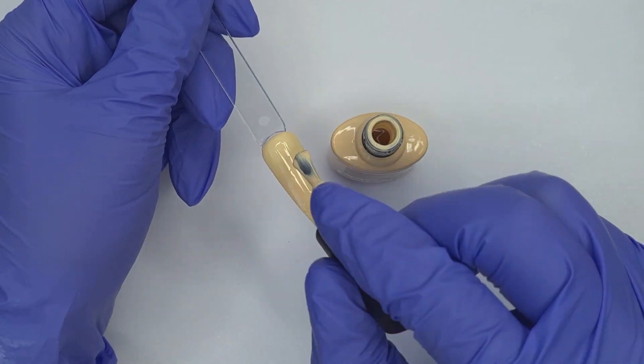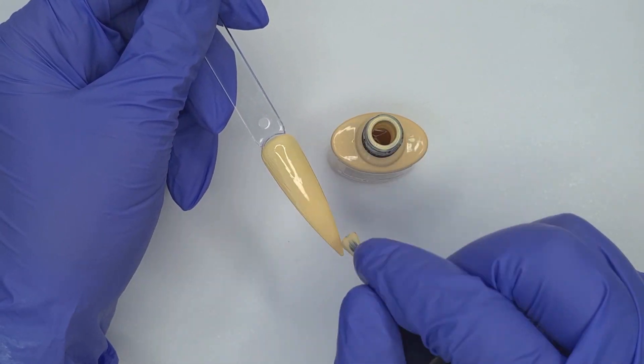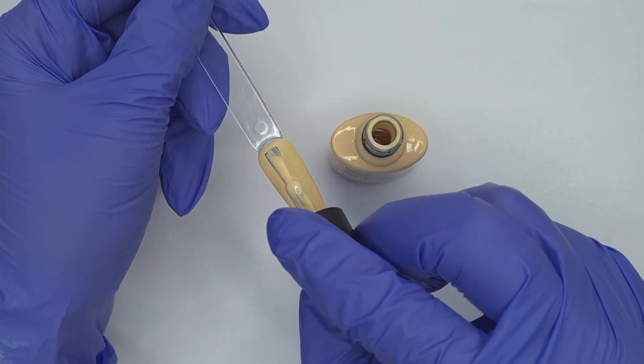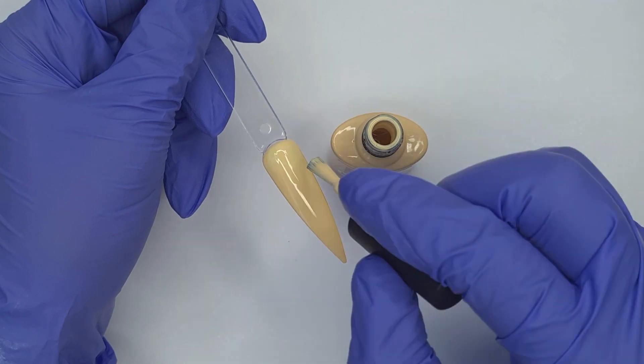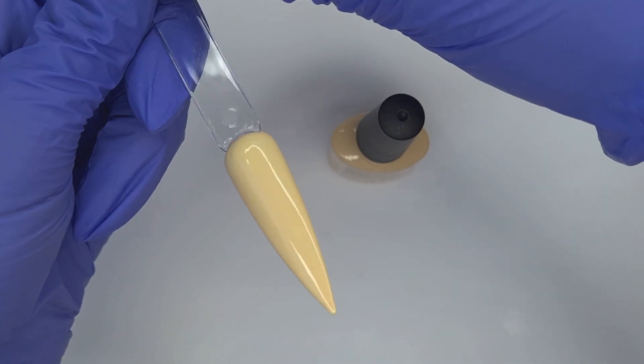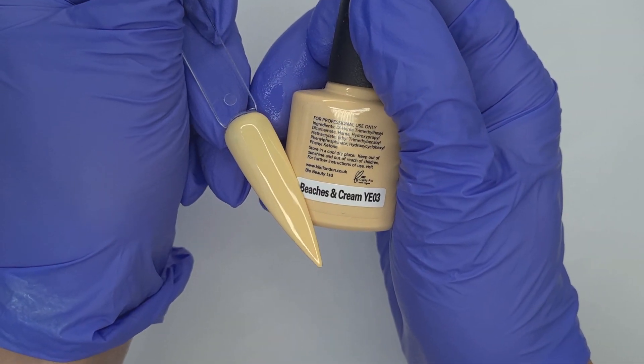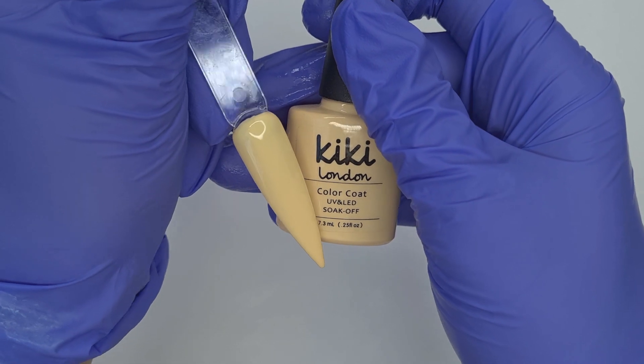I'm curing in my Kiki London Deluxe 96 watt lamp so I cure all of these colors for 30 seconds and they cure perfectly. However if you are curing in a UV lamp you'll need to cure them for around two minutes. And again once you've applied that second coat of color it just really pops.